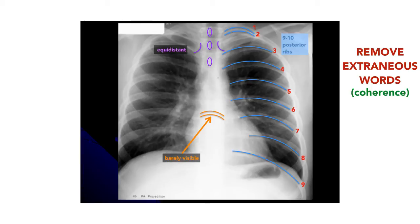So now the way I would present this slide — reading the same thing that was on the original one — would be: in order to assess the adequacy of a chest x-ray, you want to look at a couple of things. First, look at the inspiratory effort — you want to count about 9 or 10 posterior ribs. Penetration is measured by the thoracic intravertebral disc space; it should just barely be visible. And you want to assess positioning and rotation by looking at the medial clavicular heads — they should be equidistant to the spinous processes.